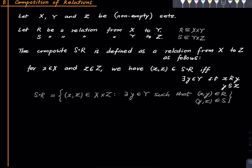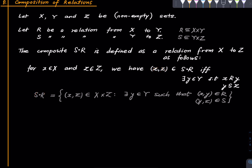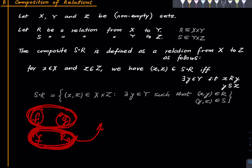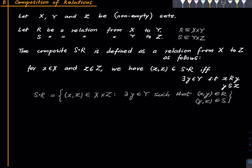This is another way to write the same thing. Basically, if there is a mediator between the two elements x and z you put that in the composite. You can see that if you have a function f and create a relation r_f, and a function g and create a relation r_g, and the target of f is the domain of g, then forming the composite of the two functions is the same as forming the composite of the two relations. This definition respects our previous definition of composites when discussing functions.